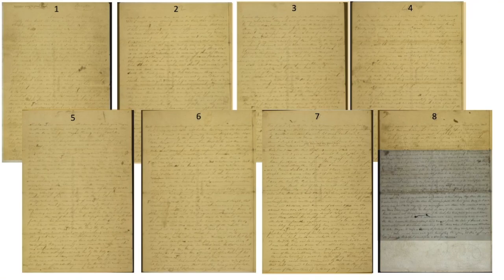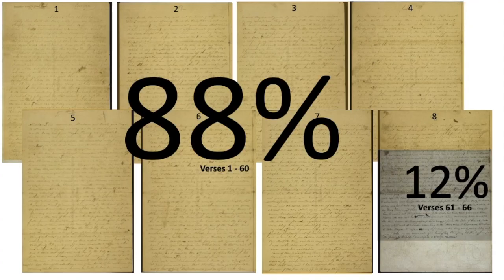Throughout this presentation, when I refer to the brown portion of the manuscript, I mean the text in the first seven and a quarter pages, and when I refer to the black portion of the manuscript, I mean the last half of the text on page eight of the document that appears to have been added by a different person. Based on word count, the initial or brown portion of the manuscript contains 88% of the document, and the black portion contains 12%. The brown portion corresponds to verses one through 60 in section 132, with the black portion being the source for verses 61 through 66.